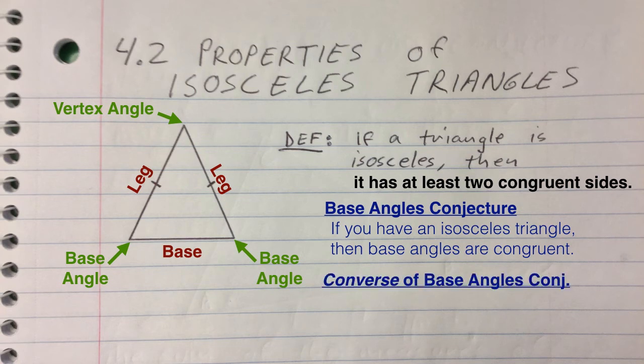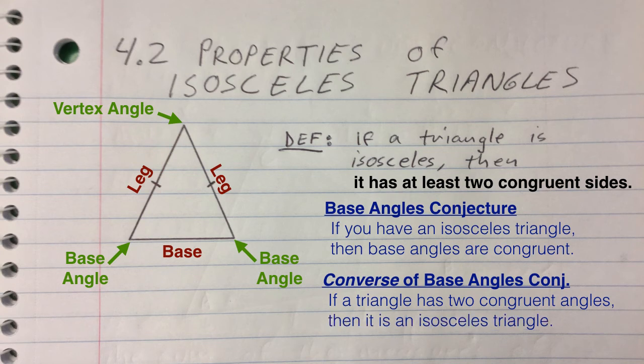The converse of the base angles conjecture is also true. The converse flips around the if with the then. It would say if two angles are congruent in a triangle then that triangle must be an isosceles triangle.